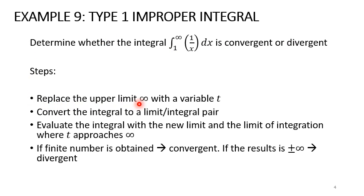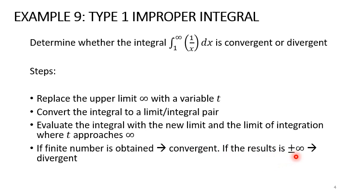Replace the upper limit infinity with variable t. Then convert the integral into a limit-integral pair. Evaluate the integral with the new limit and see what happens when t approaches infinity. If a finite number is obtained, the integral is convergent. If the result is positive or negative infinity, meaning there is no limit, then the integral is divergent.